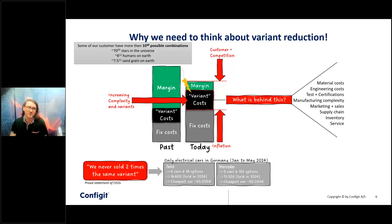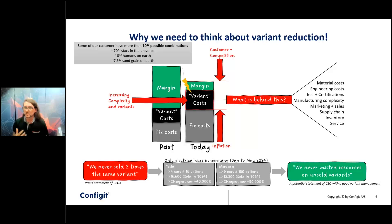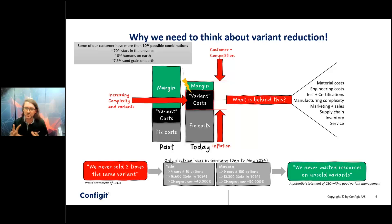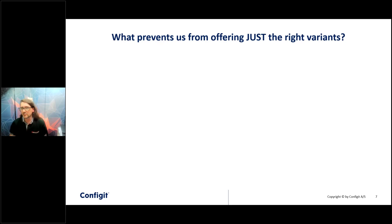More variance doesn't automatically mean you can sell more. Sometimes fewer options can be easier — when you go into a configurator thinking about 18 options it's quite easy, but thinking about 150 options takes a while. Instead of thinking 'we never sold two times the same variant,' we should think 'we never wasted resources on unsold variants.' That should be the target — a potential statement from a CEO with good variant management.